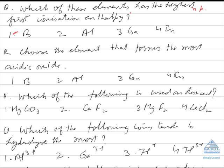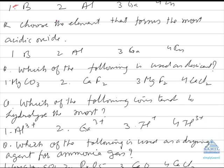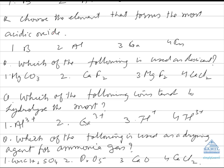Choose the element that forms the most acidic oxide. Higher the ionization energy, greater the non-metallic character, so greater will be the acidic nature of the oxide. As we move down the group, acidic character of the oxide decreases. Hence, boron oxide will be the most acidic.